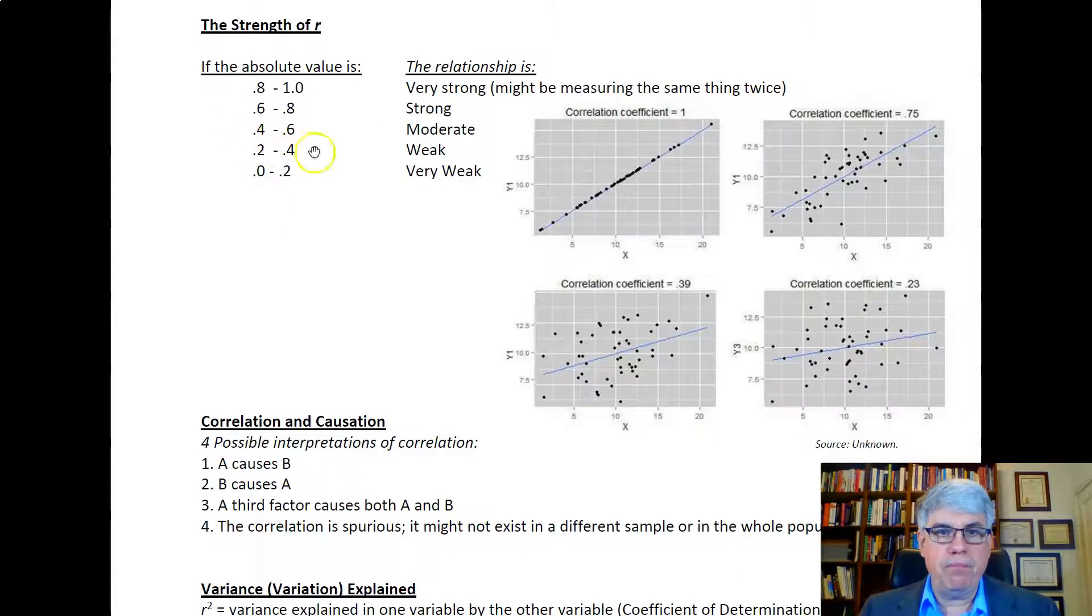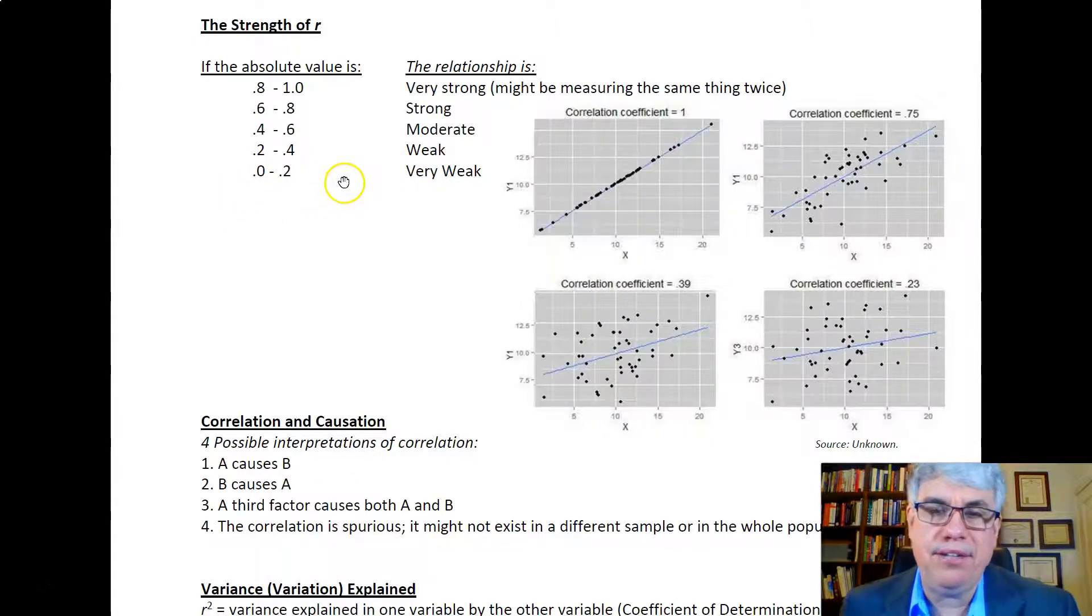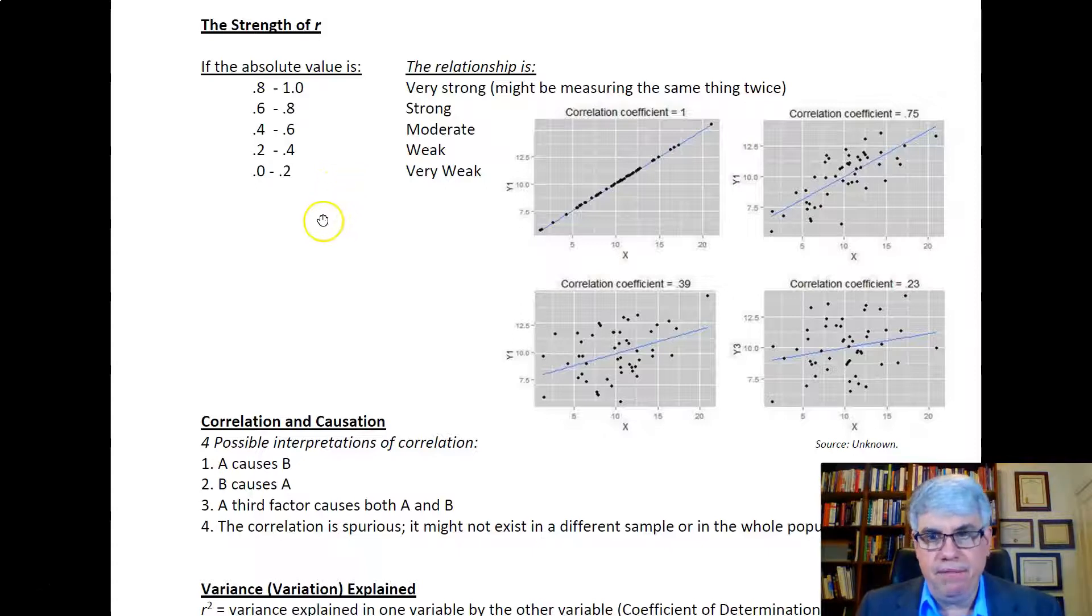Between 0.4 and 0.6 is moderate. Between 0.2 and 0.4 is weak, and that's how most psychological variables are related to each other. They're weak relationships because there are so many things affecting us that the influence of any one thing is fairly weak. Between zero and 0.2, we can say it's very weak.